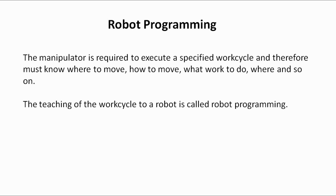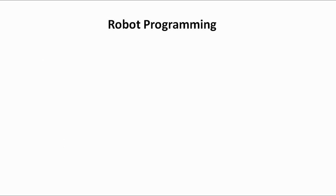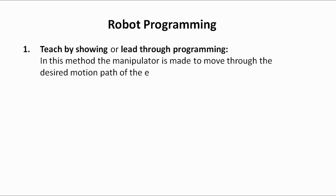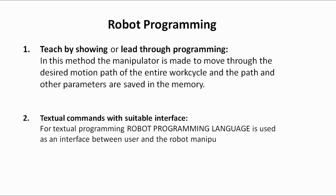Robots can be programmed in two different ways: number one, teach by showing or lead through programming; number two, textual commands with a suitable interface. In the teach by showing method, the manipulator is made to move through the desired motion path of the entire work cycle, and the path and other parameters are saved in the memory as we move the arm through the desired motion.